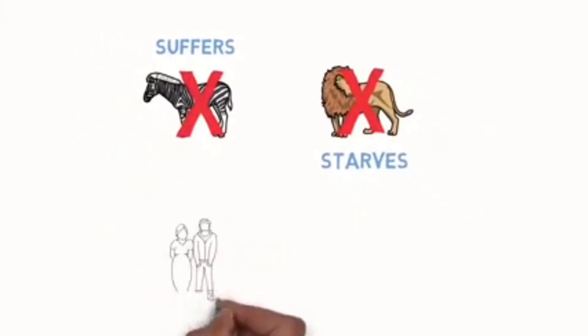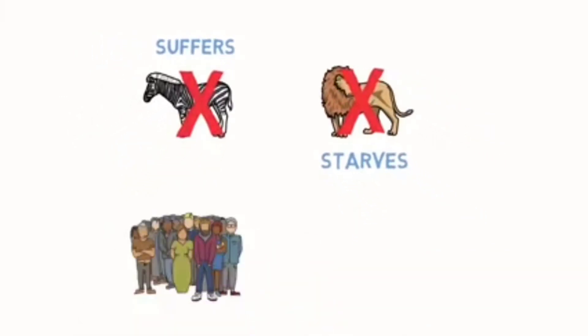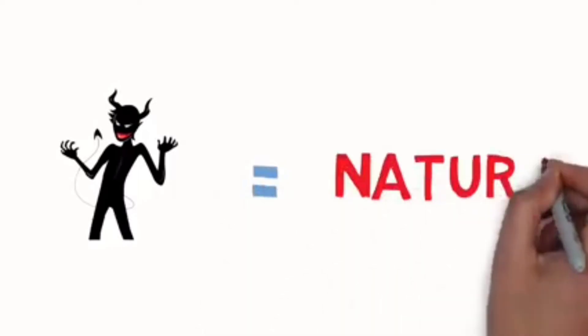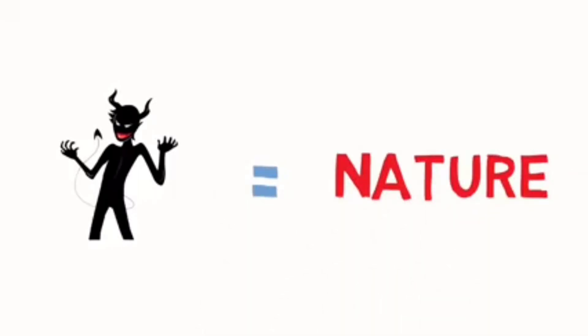While watching this video, some people want the zebra to escape, and some people want the lion to catch the zebra. But neither the zebra nor the lion is the villain of this story. The real villain is the design of nature itself, which forces organisms to kill each other.